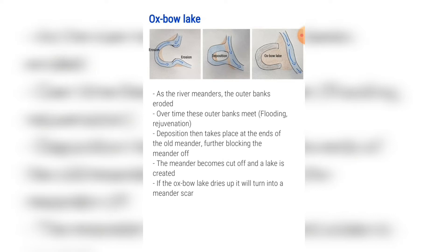Deposition then takes place at the end of the old meander, further blocking it off. If the meander becomes cut off, a lake is created — this is known as an oxbow lake, as shown in figure three. If an oxbow lake dries up it will turn into a meander scar.